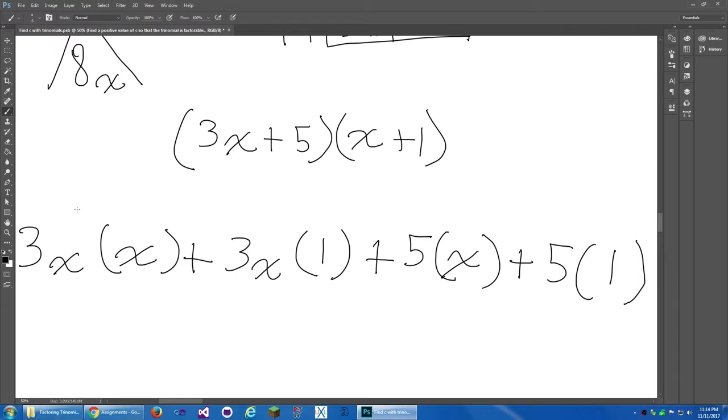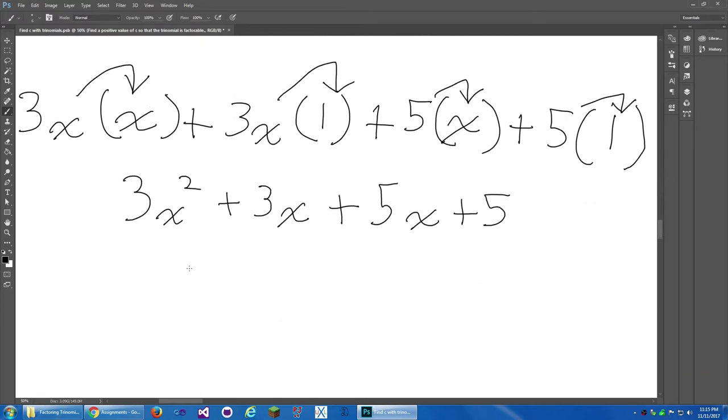3x times x is 3x squared plus 3x times 1 is, well obviously that's just 3x, plus 5 times x is 5x plus 5 times 1 is just 5. I was going to say 1 but obviously that's not 1. So now to simplify it we've got 3x squared plus, 3 plus 5 is 8, 8x because these are the same. I can't remember what that is off the top of my head right now. Is it similar? And then plus 5.